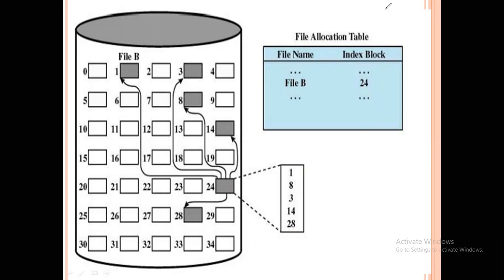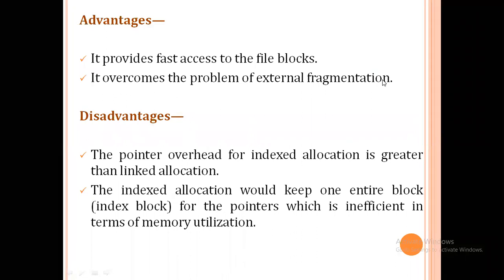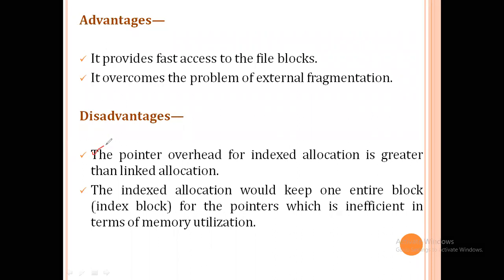The advantage of index allocation is that it supports direct or fast access to the file blocks because everything is available in the form of an index. It also overcomes the problem of external fragmentation. The disadvantage is that the pointer overhead is much more, because the index allocation keeps one entire block reserved for pointers, which is inefficient in terms of memory utilization.